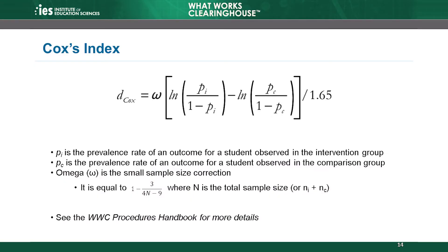For dichotomous variables — those with only two possible categories — the WWC uses a version of Cox's index to calculate equivalence. Cox's index is designed to produce an effect size measure that is comparable to Hedges G, but the formula for Cox's index relies on more complex mathematical functions. The formula includes logarithms, written as LN, and a calculation called an odds ratio. Cox's index applies a logarithm to the odds ratio for the intervention group, subtracts the same for the comparison group, and then divides by 1.65. Like the formula for Hedges G, it includes a small sample size correction denoted by the omega. You will find more information about this formula in the WWC Procedures Handbook.